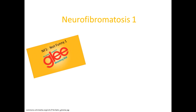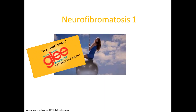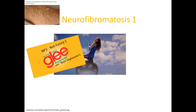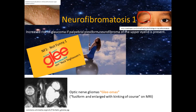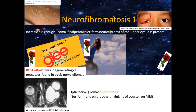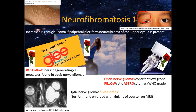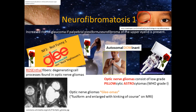Next is NF1, neurofibromatosis 1, remembered by thinking of the show Glee where the main character sings 'Wrecking Ball,' because NF1 is also known as von Recklinghausen disease. The reason she is swinging in the galaxy is because there's an increased risk of glaucoma if there is a palpebral plexiform neurofibroma. The show Glee reminds you of optic nerve glioma, described as a fusiform or enlarged optic nerve with kinking on MRI. The degenerative cell processes in optic nerve gliomas are known as Rosenthal fibers, and these gliomas are low-grade pilocytic astrocytomas — hence the astronaut resting on a pillow.